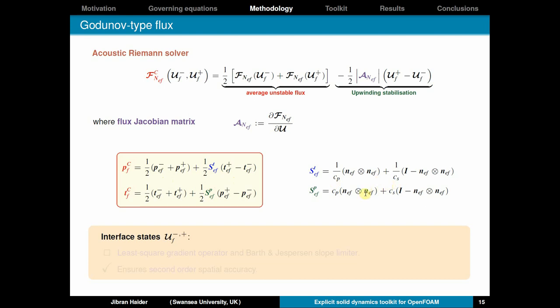So, as you can see in both these equations, the first terms show the average part and the second terms show the stabilization part. Here, S are the stabilization matrices shown here, where C_p is the pressure wave speed in the domain and C_s is the shear wave speed. The small n denotes the spatial normals. Now, if you know how to compute this negative and positive states on either side of the interface, you are able to evaluate the fluxes. So, the interface states are obtained by using a least square gradient operator and a Barth-Jespersen slope limiter. This ensures second-order spatial accuracy.